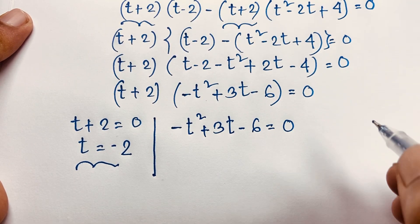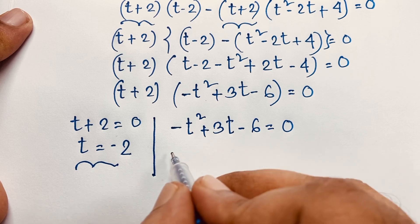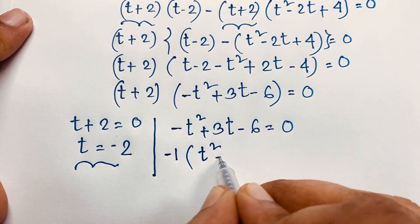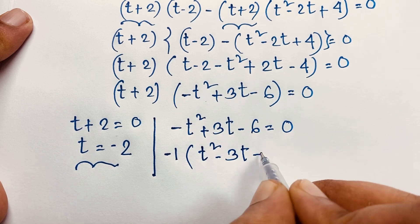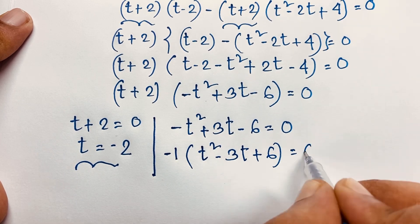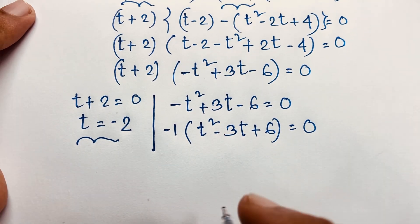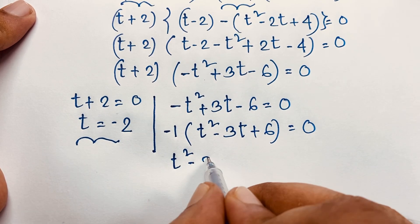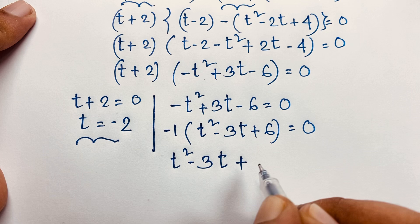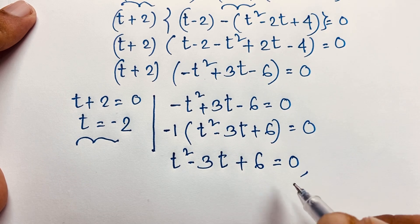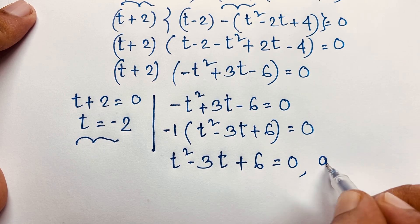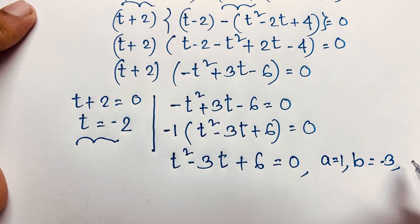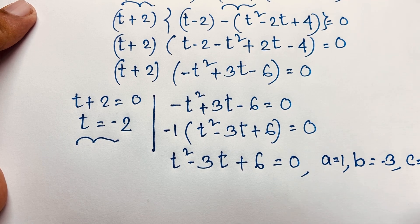Taking negative sign as common, it will be positive t squared minus 3t plus 6 is equal to 0. Dividing both sides by negative 1, it will be t squared minus 3t plus 6 is equal to 0. Here a is equal to 1, b is equal to minus 3, and c is equal to 6.